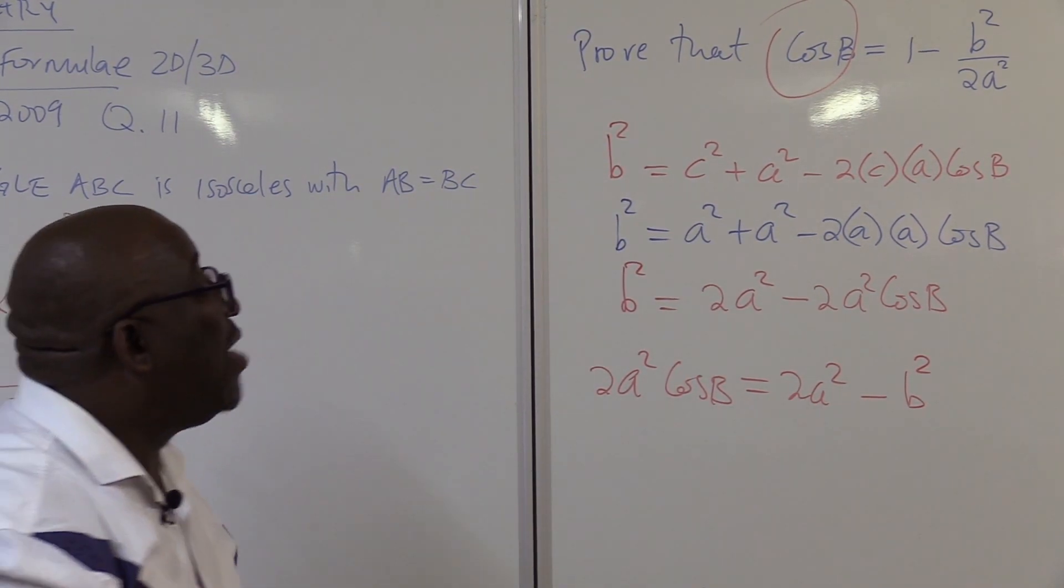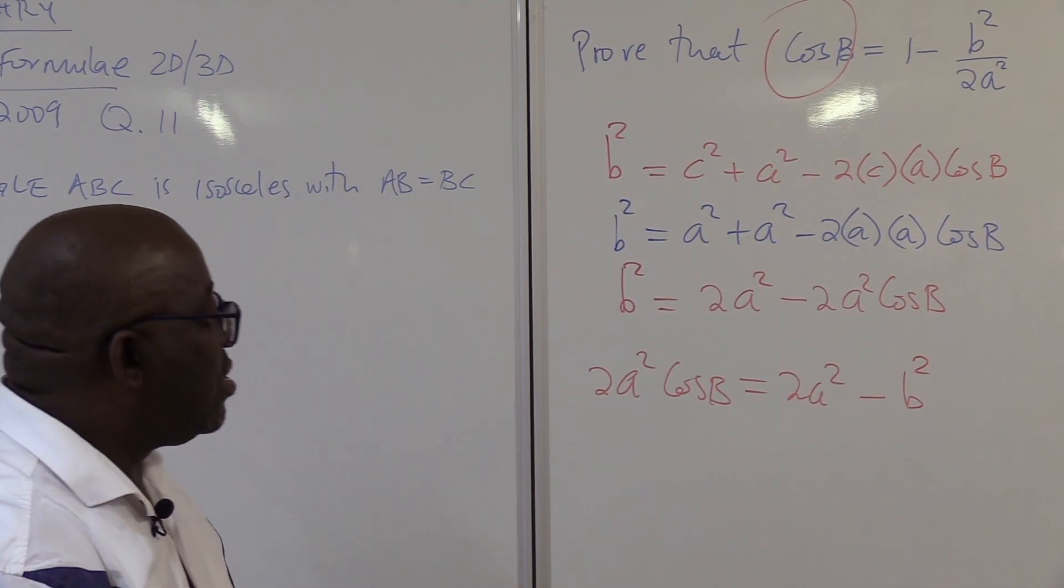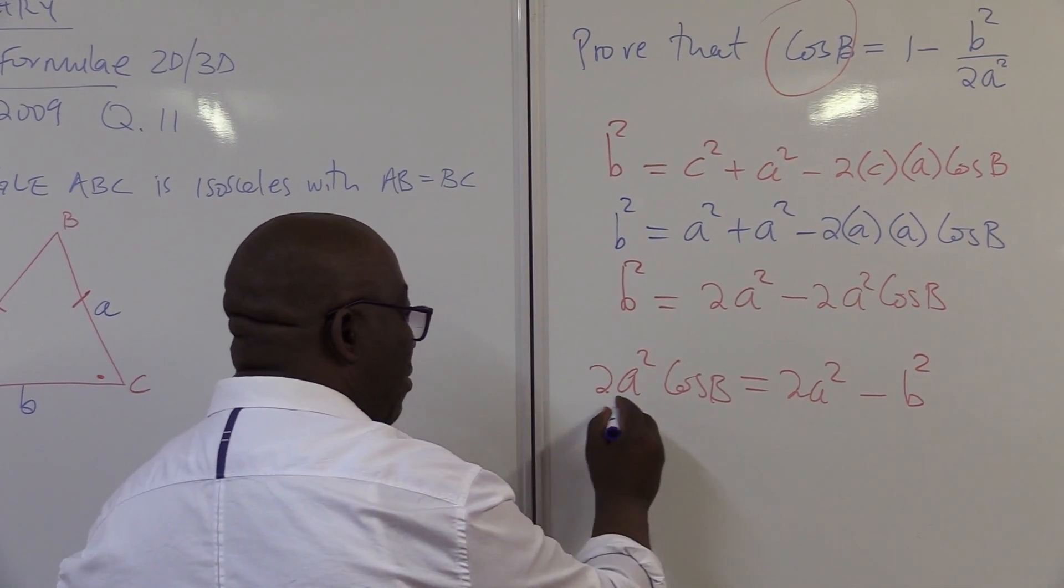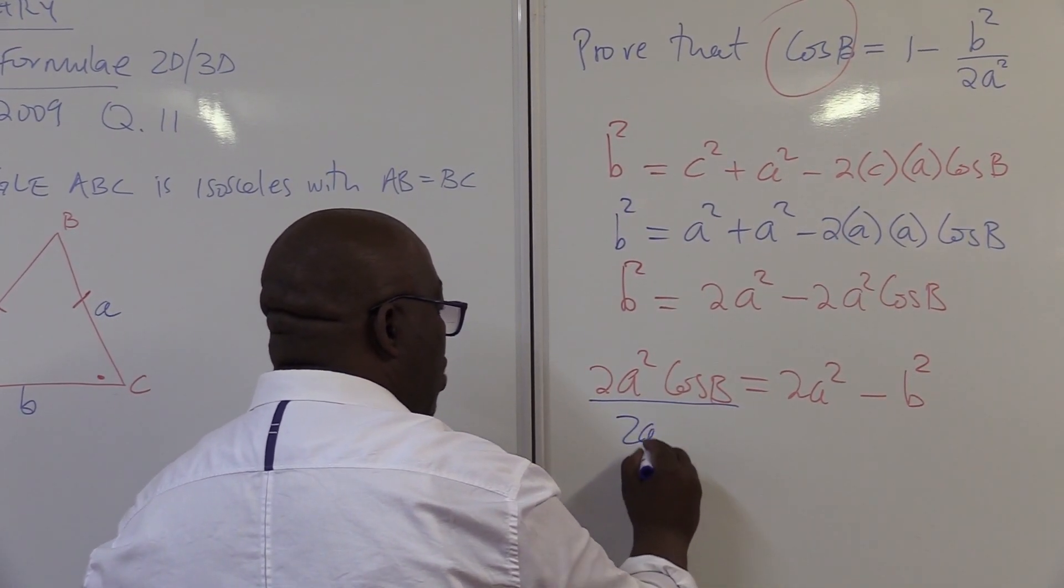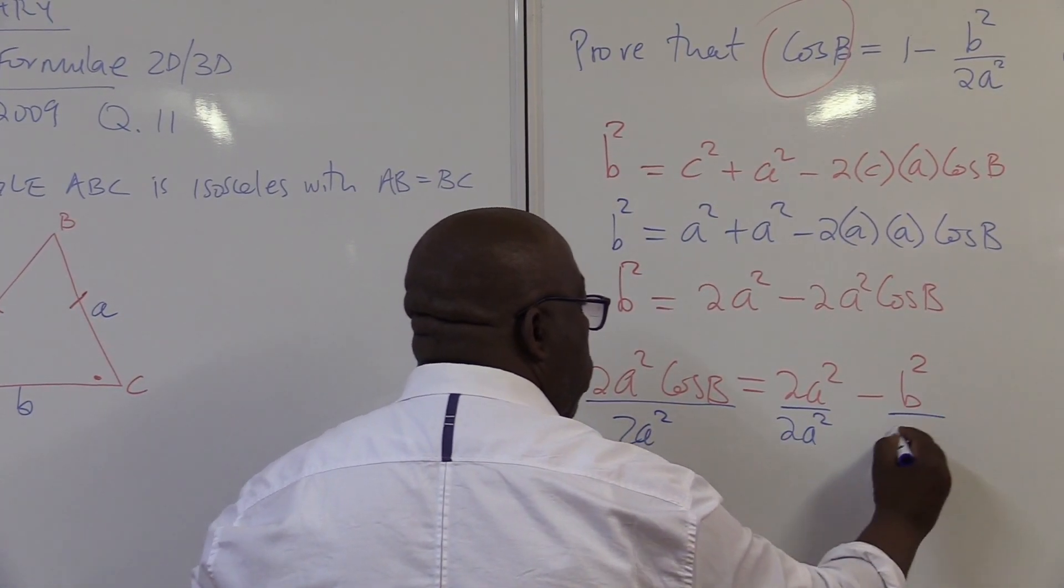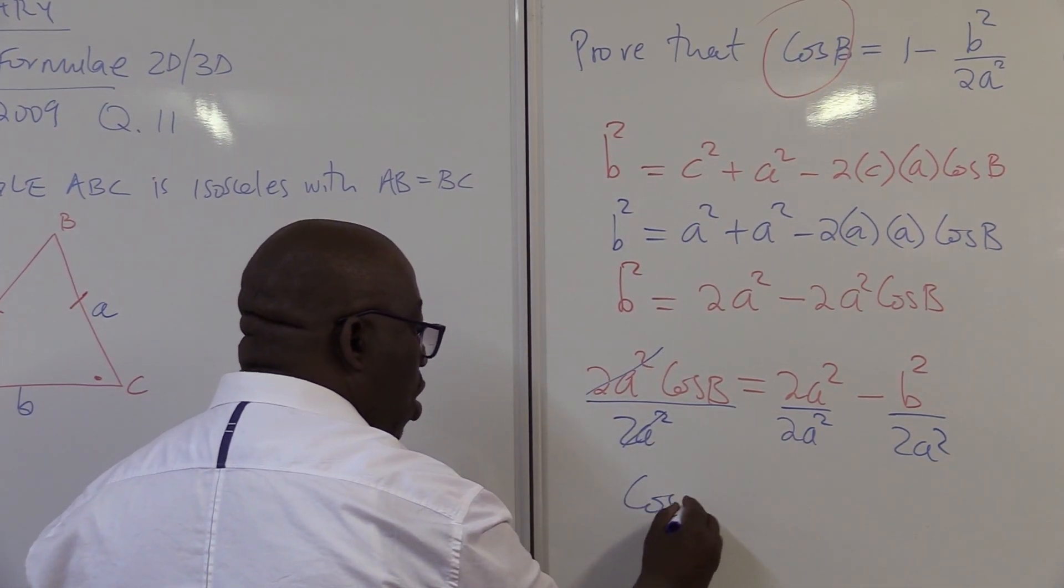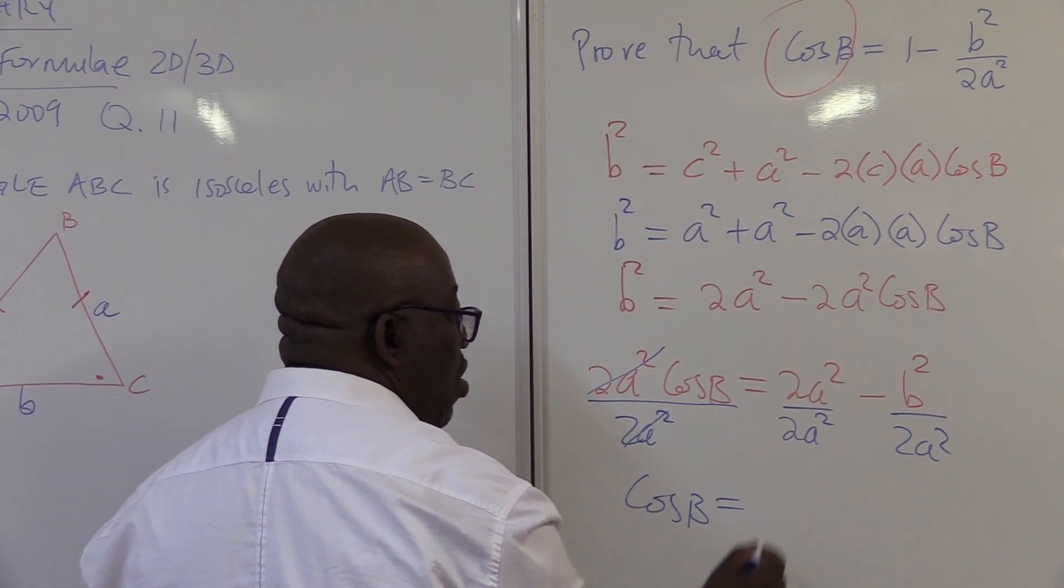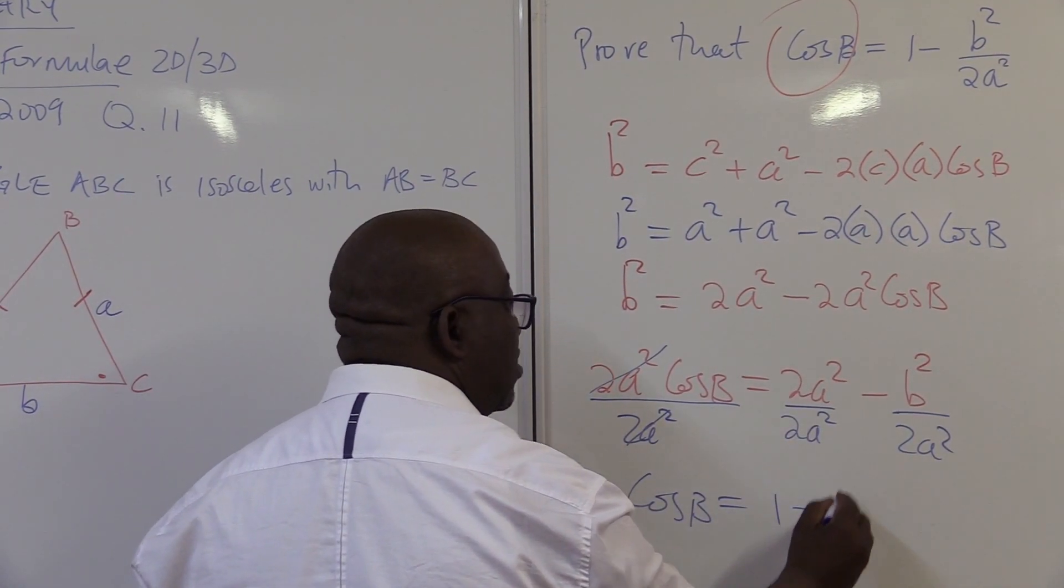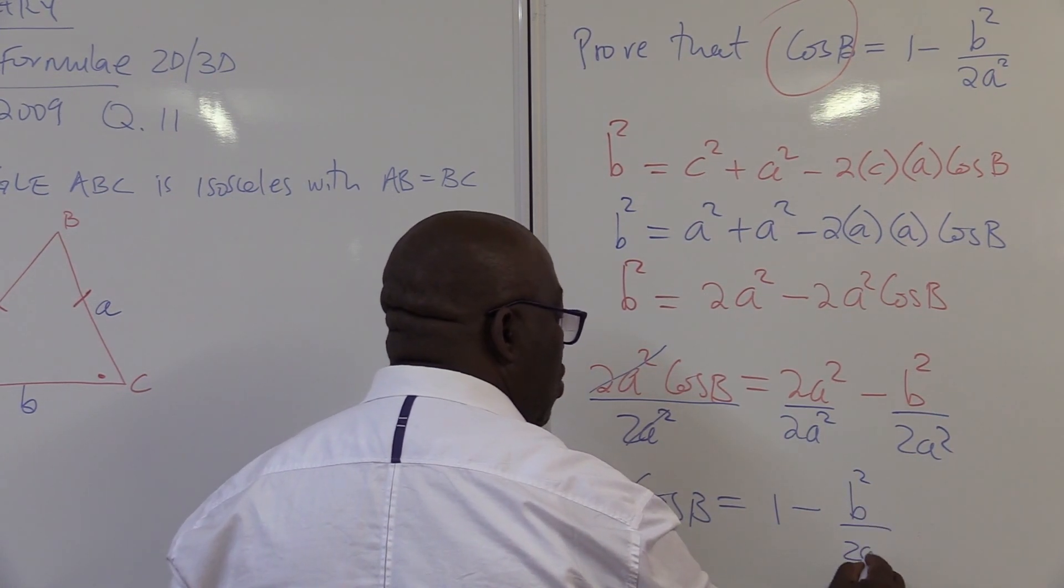What is it that we're looking for? We want to make cos B the subject of the formula. Let's do this thing. If I want to make cos B the subject of the formula, get rid of this one. How? By dividing by 2A squared this side. What we do there, we do it everywhere. I'll be left with cos B is equals to, what is 2A squared divided by 2A squared? It is 1 minus, exactly as it is, which is B squared over 2A squared.